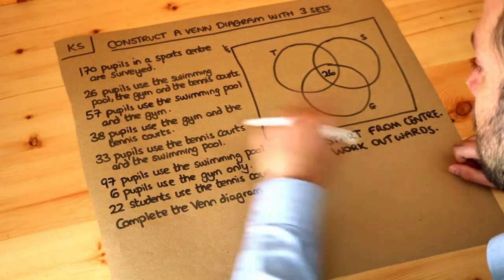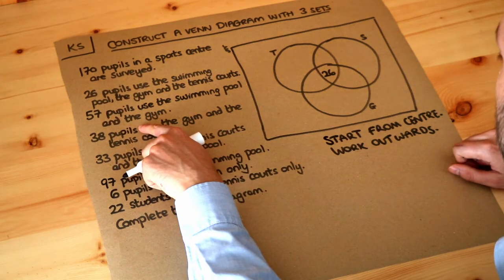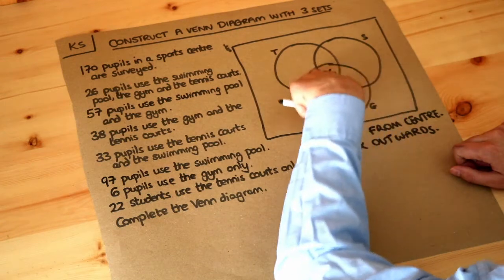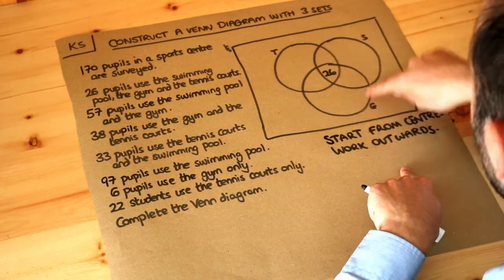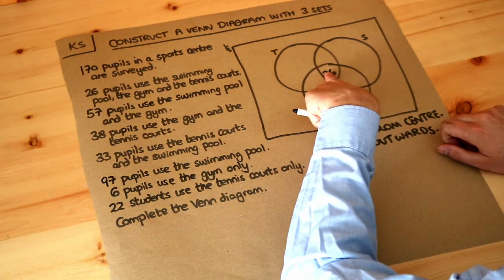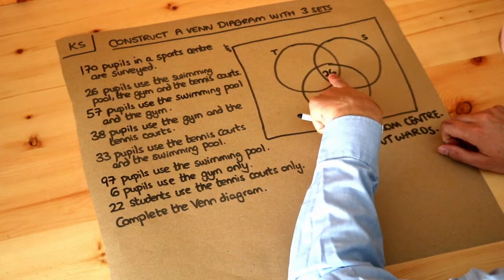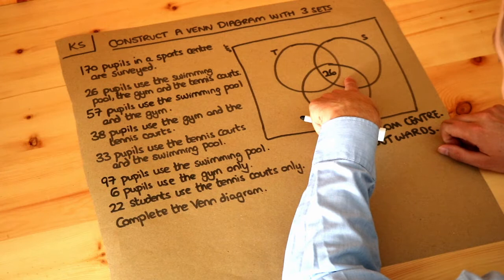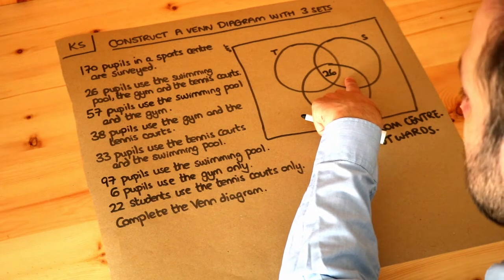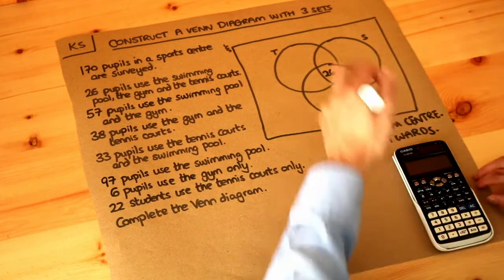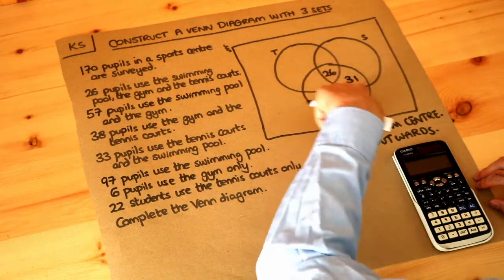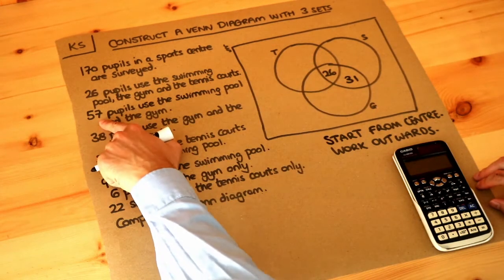We're told that 57 pupils use the swimming pool and the gym. That's the overlap of the S circle and the G circle, which includes both the region with all three facilities and the region with just swimming pool and gym but not tennis. These two regions add up to 57, so we do 57 minus 26 to get 31 — the number who use the swimming pool and gym but not the tennis courts.